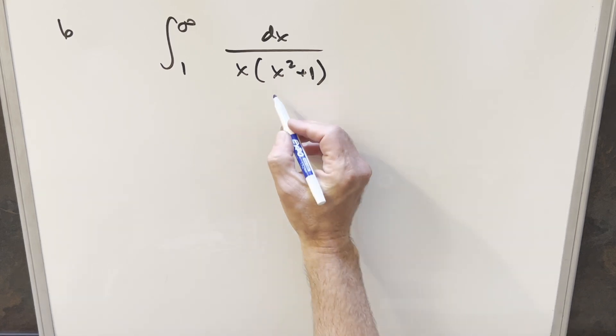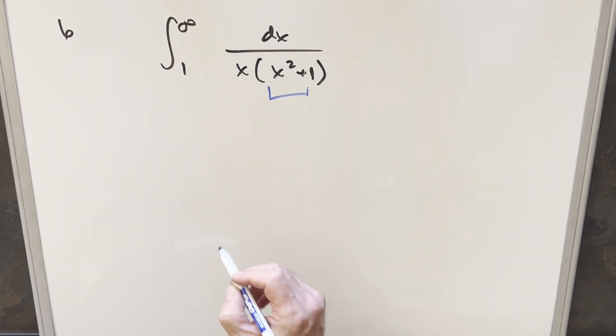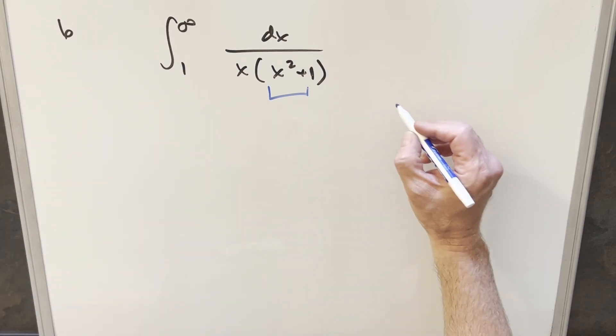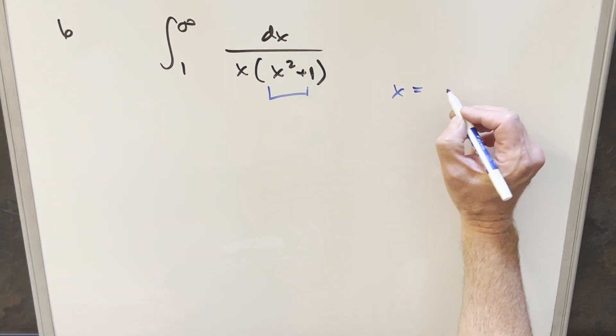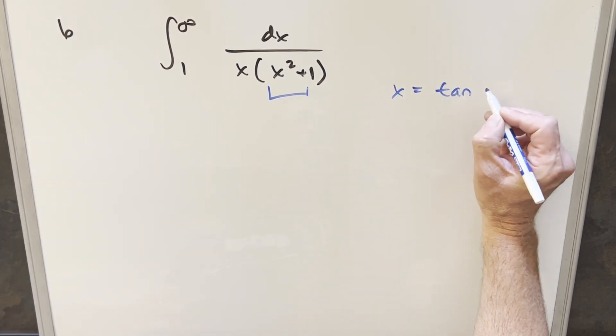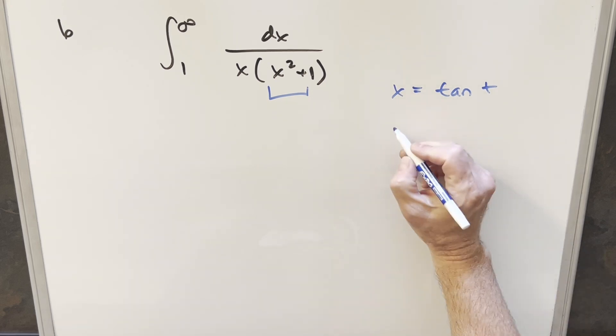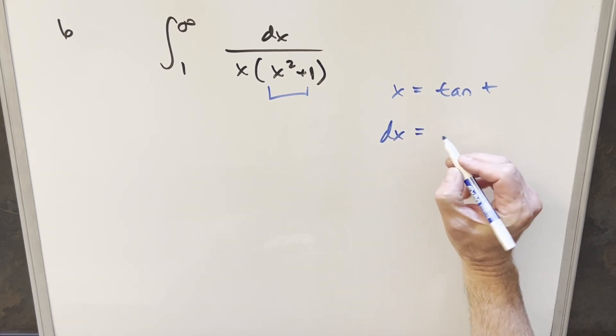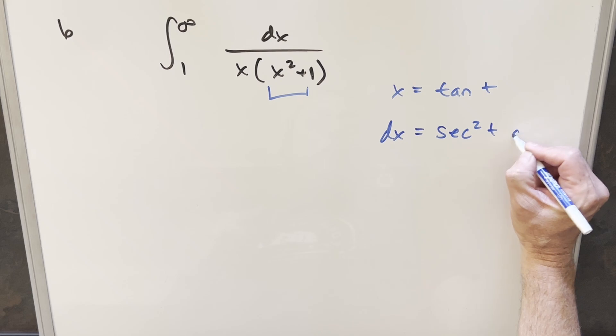To get started with this, I just noticed x squared plus 1 here. It's making me think trig substitution, even though we've got this x. So let's give that a try. We'll set x equal to tan of t. Then we'll take a derivative on this. Our dx value is just going to become secant squared t dt.